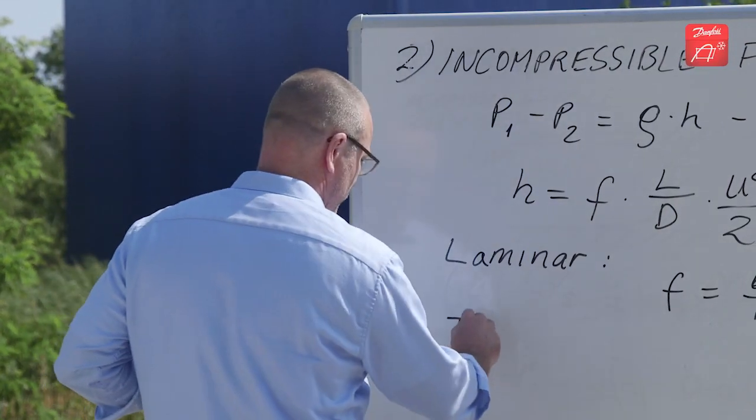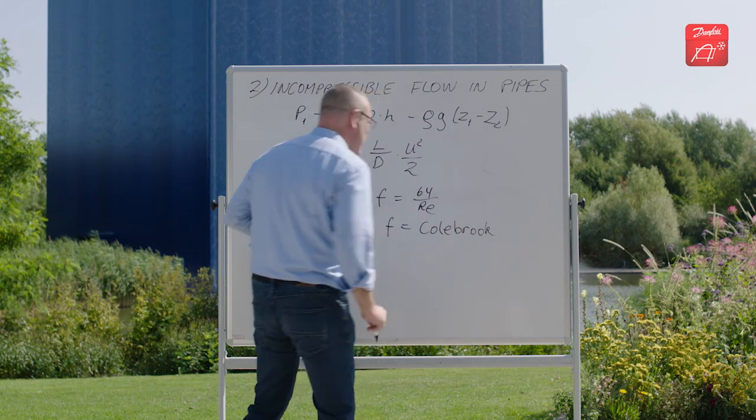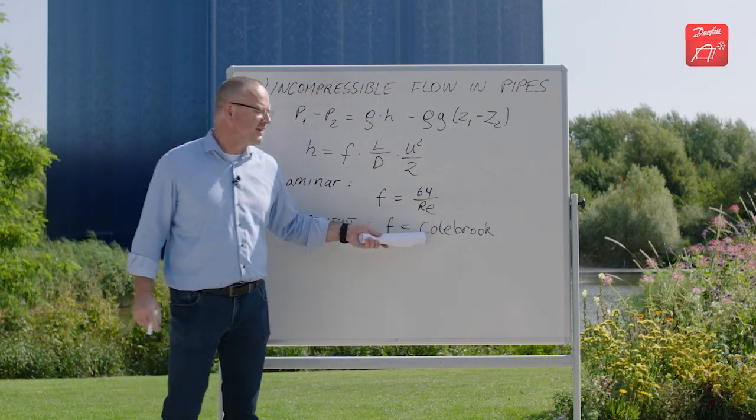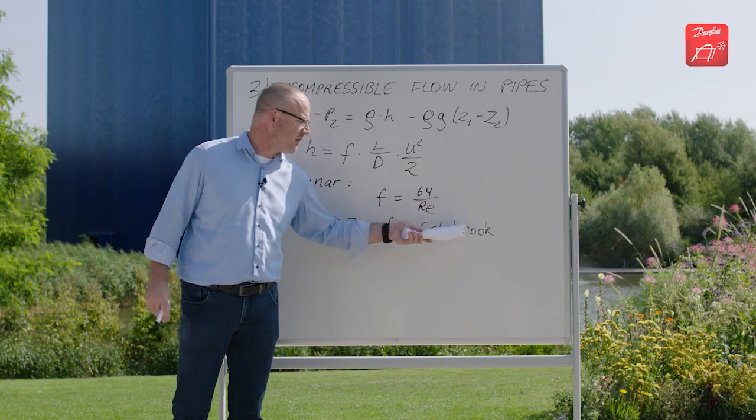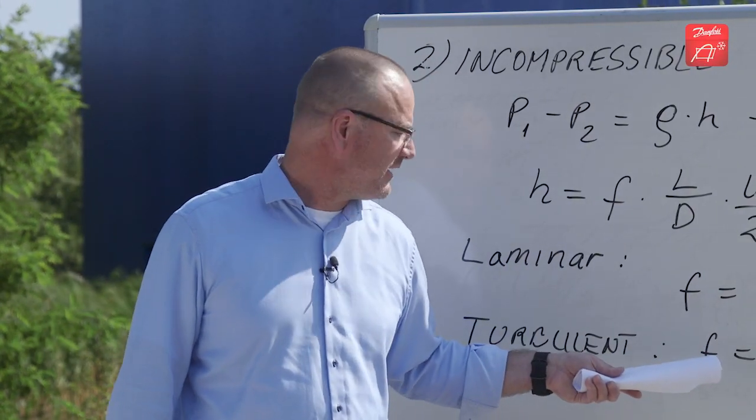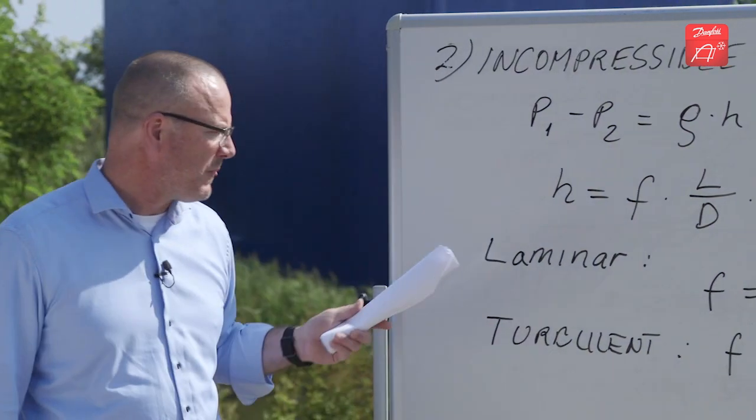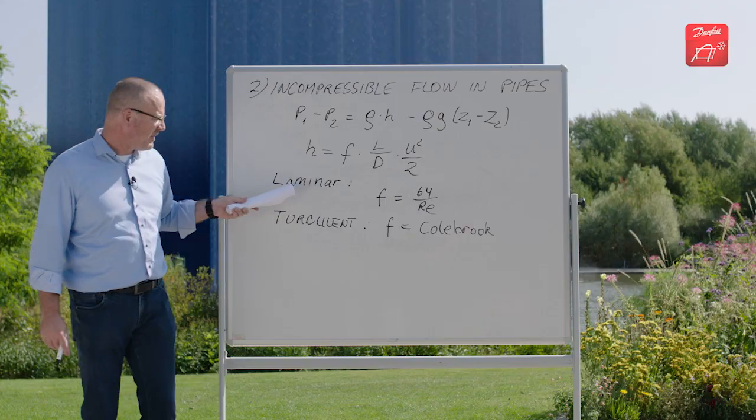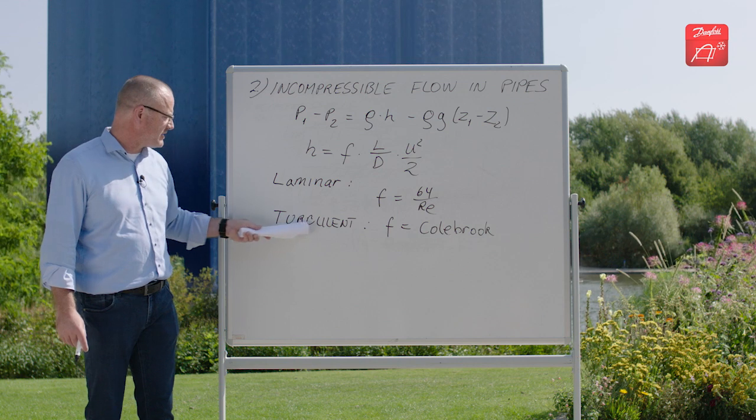If you have turbulent flow, we use an equation or a correlation developed by an English engineer called Colebrook. I am not going to write the equation, it is well known and you can find it in the literature. So, the question is, when is the flow laminar and when is it turbulent?